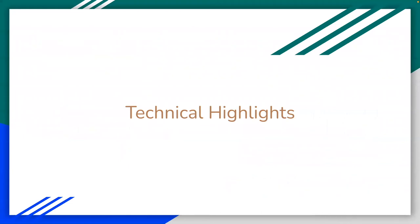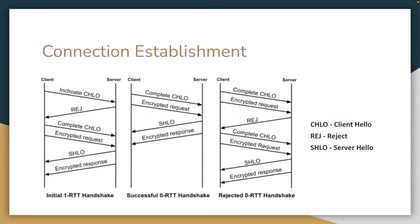Moving to some technical highlights — these are highlights of the QUIC protocol specifically, not HTTP 3, though they are closely related since HTTP 3 is built on QUIC. I really want to highlight connection establishment, as it's one of the main selling points of QUIC. We'll start with the one RTT handshake, which is basically what has to happen in order to make it to the zero RTT handshake — initializing everything so we can get there.